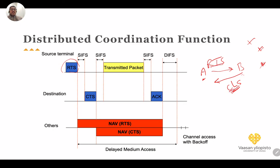Inside the RTS and CTS messages, the packet size to be transmitted is also included, so nearby terminals can estimate the time duration that the channel will be busy. After the RTS, the destination waits a Short Interframe Space (SIFS) and sends the CTS. After another SIFS the data packet is sent, followed by an acknowledgement, after which all terminals wait the DIFS before transmitting again.